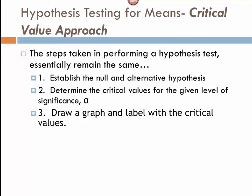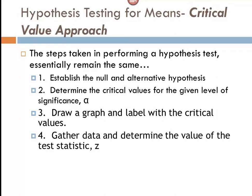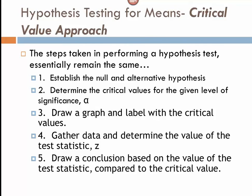Then we draw a normal curve and label it with our critical values. This is critical — we want to see visually, before we even do our test, what the bar is that we need to surpass with our test statistic. Then we gather our data, determine the value of our test statistic Z, and draw a conclusion based on where that value falls on our graph.